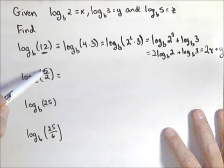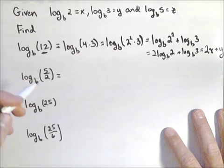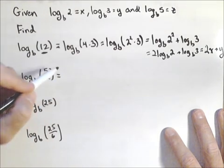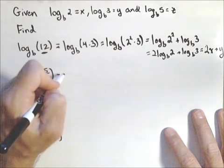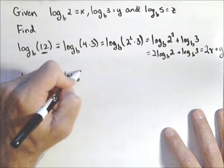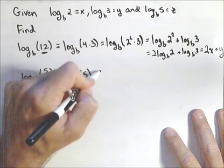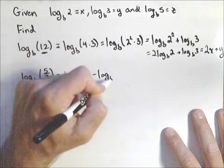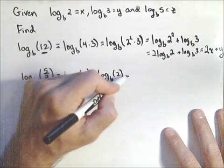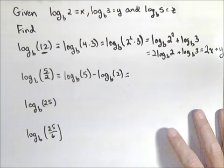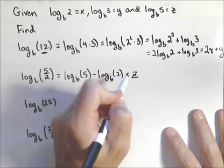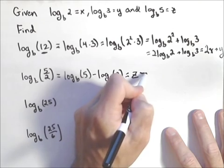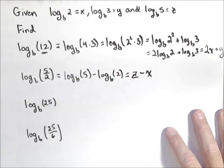The second one, notice we have division. Now, we already have it in terms of 5 and 2, which is good, and properties of logs says if we have a quotient inside our log, we can rewrite that as log base b of 5 minus log base b of 2. Log base b of 5 we know is z, log base b of 2 we know is x, so it simplifies down to z minus x.